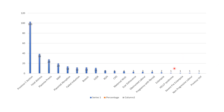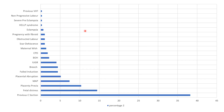The data showed cesarean section indications: the most common was previous cesarean section, with around 103 cases. Other indications included fetal distress as the second most common, followed by placenta previa, morbid adherent placenta, and other indications. The same data is also shown in another graphical format, confirming that the maximum number of cesarean sections were due to previous cesarean section, then fetal distress, placenta previa, morbid adherent placenta, and placental abruption.